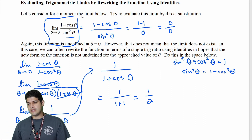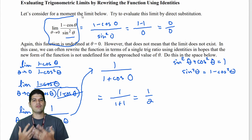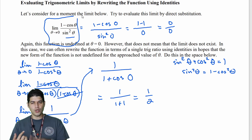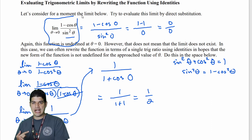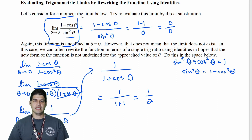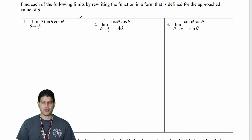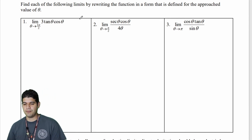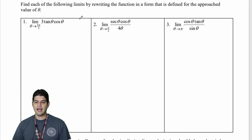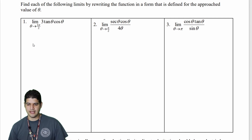We can't end with 0/0, so rewriting with trig identities — Pythagorean identities, quotient identities — is really helpful when solving these limits. Now let's tackle three more examples using identity rewriting. First: the limit as theta approaches 3π/2 of 3tan(θ)cos(θ).